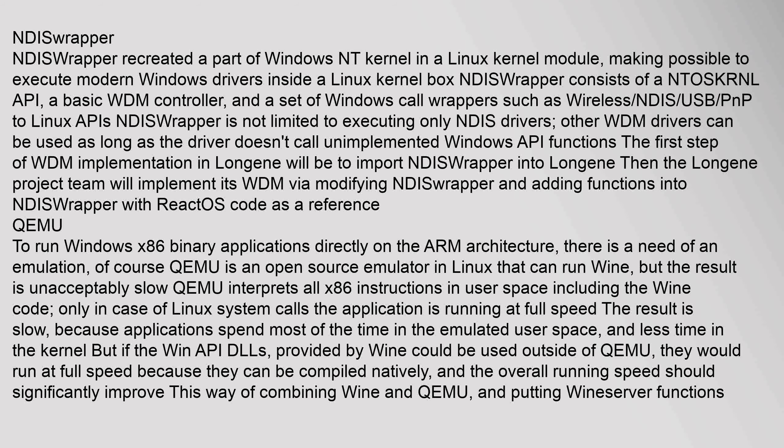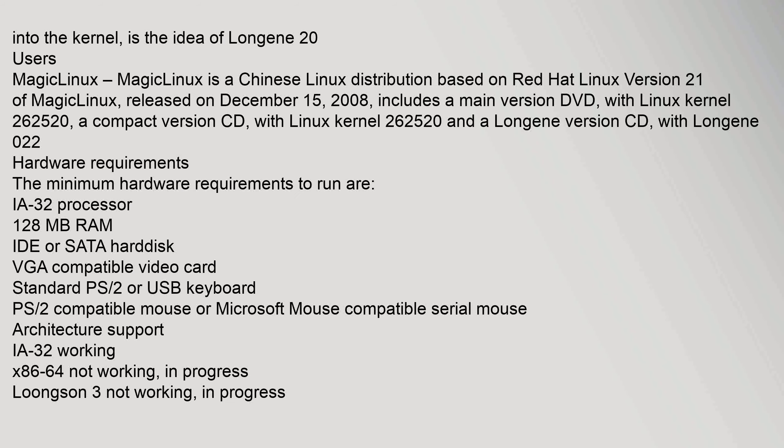To run Windows x86 binary applications directly on ARM architecture, emulation is needed. QEMU is an open source emulator in Linux that can run Wine, but the result is unacceptably slow because QEMU interprets all x86 instructions in user space including the Wine code. Only in the case of Linux system calls does the application run at full speed. If the Win API DLLs provided by Wine could be used outside of QEMU, they would run at full speed because they can be compiled natively, significantly improving overall running speed. This way of combining Wine and QEMU and putting Wine server functions into the kernel is the idea behind Longin 2.0.